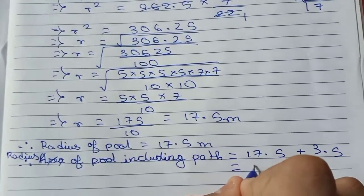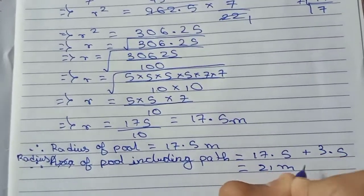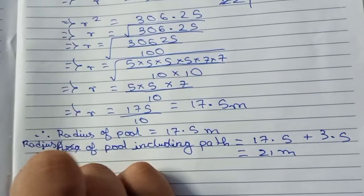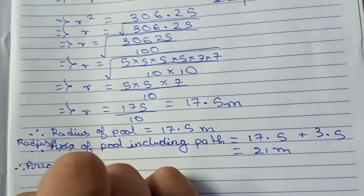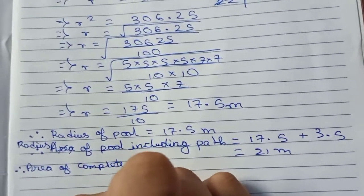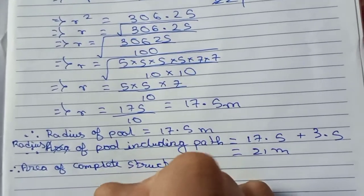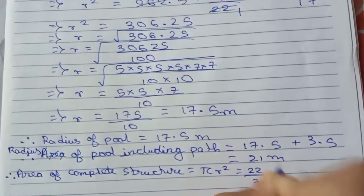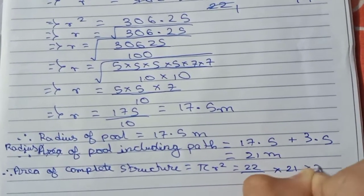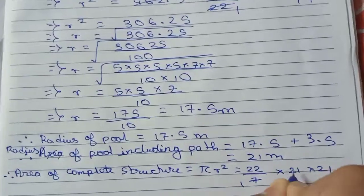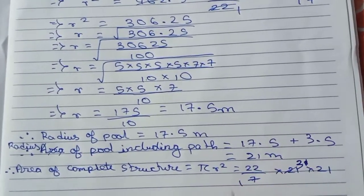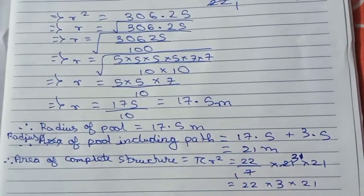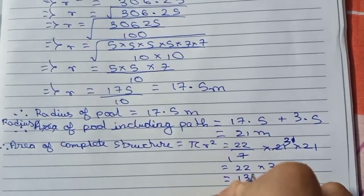Now 17.5 plus 3.5 equals 21 meter. Therefore the area of the complete structure equals pi r square equals 22 by 7 into 21 into 21. We cut 7 and 21, so it equals 22 into 3 into 21, which becomes 1386 meter square.